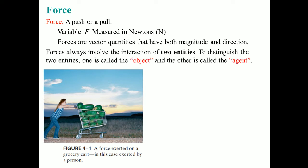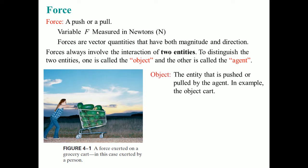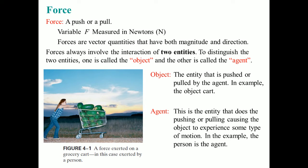Forces will always involve two objects. To distinguish the two entities, one is going to be called the object and the other one is called the agent. The object is the entity that is pushed or pulled by the agent. In this example, the object would be the cart because it is being pushed by the person. That person would be considered the agent — it is the entity that is doing the pushing or pulling, causing the object to experience some form of motion. The watermelon in the cart is not the object nor the agent, because the woman is not pushing the watermelon — she's pushing the cart.